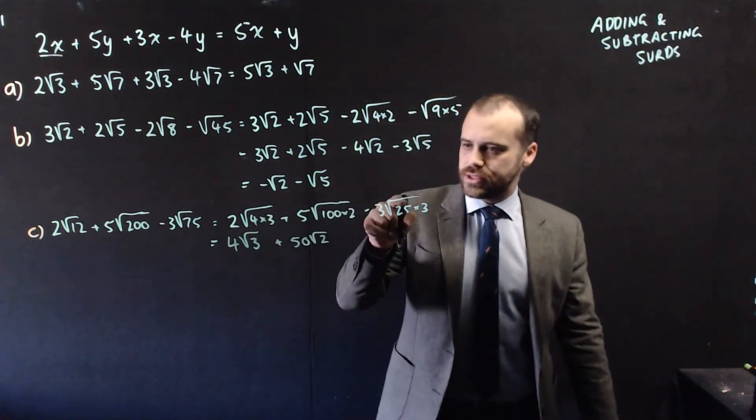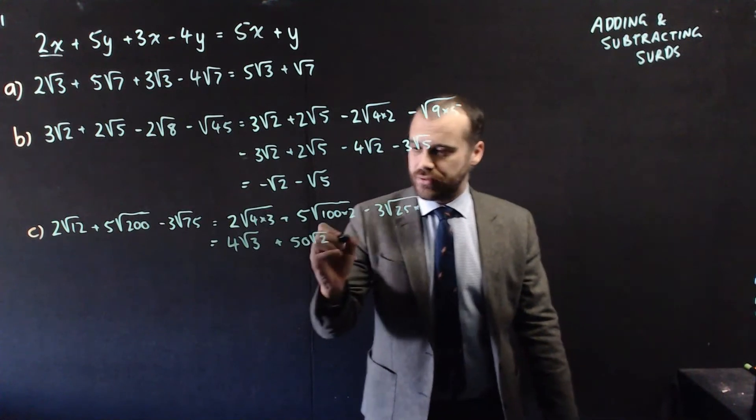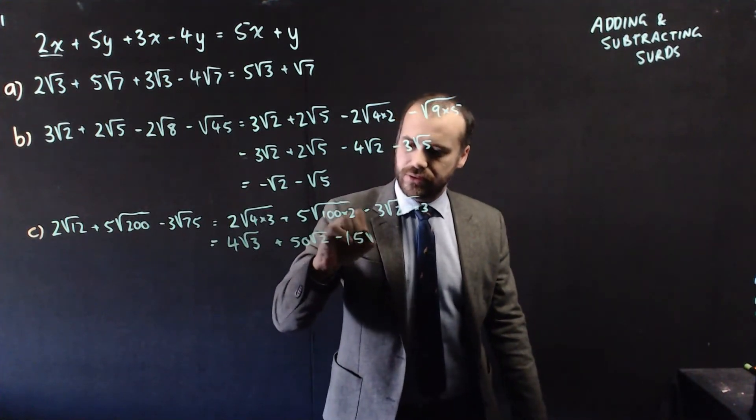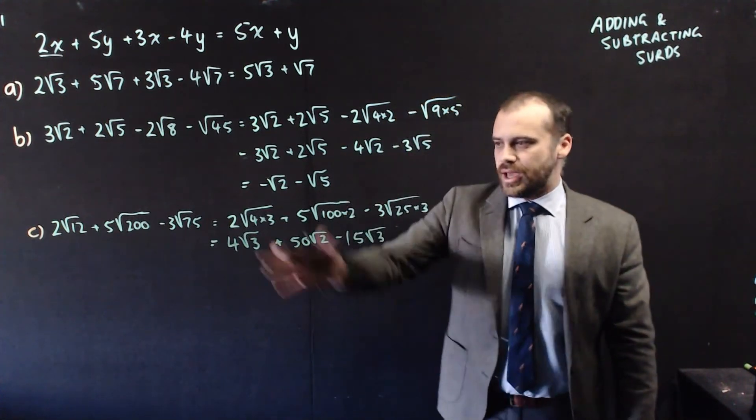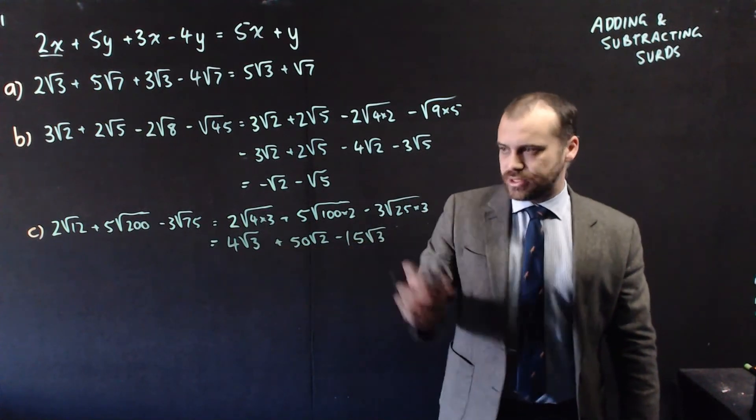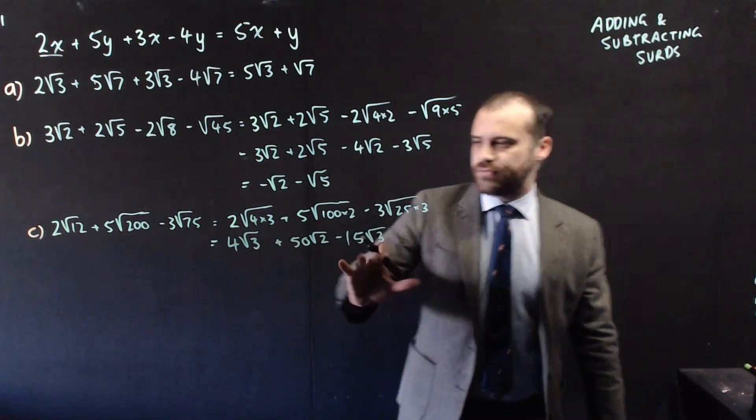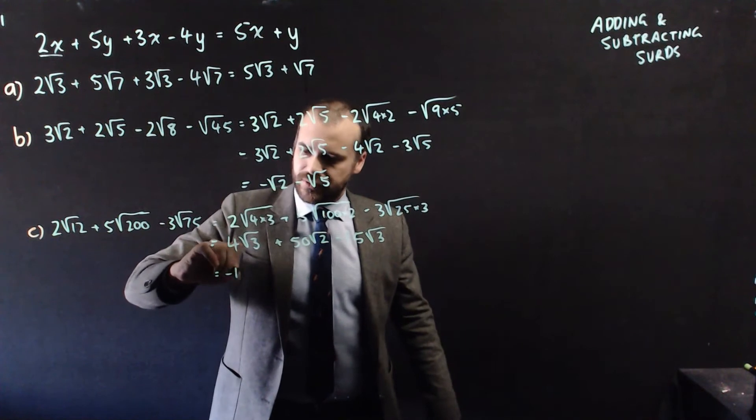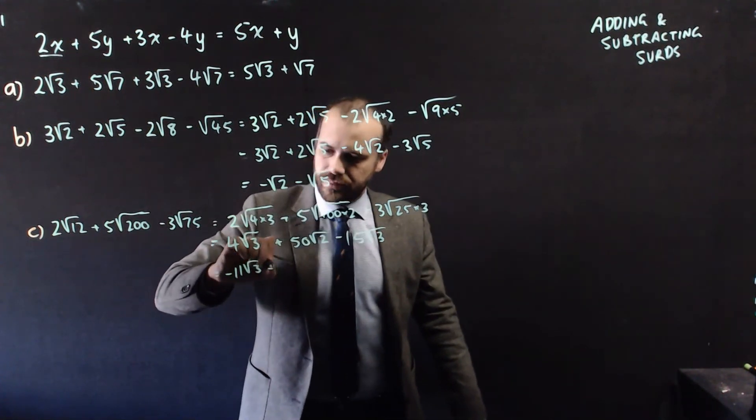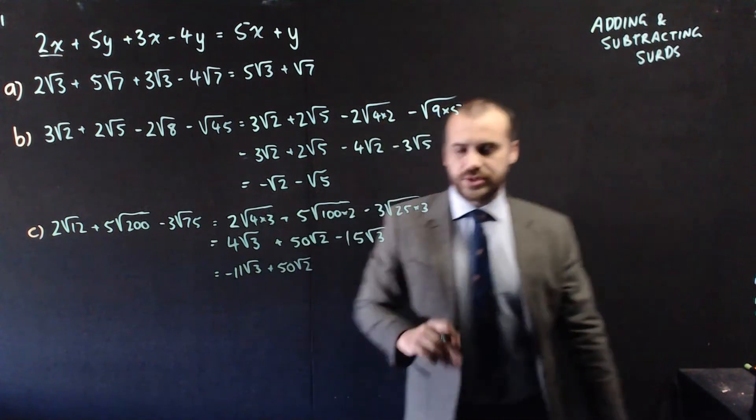And then this, the 25 is going to come out as a 5. Negative 3 times 5, negative 15 root 3. And finally, we can group these like terms. 4 root 3 minus 15 root 3 is negative 11 root 3 plus 50 root 2.